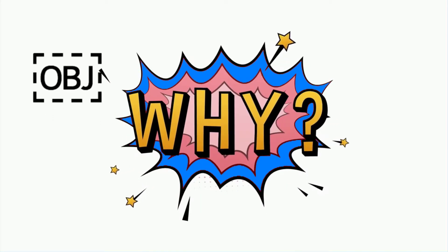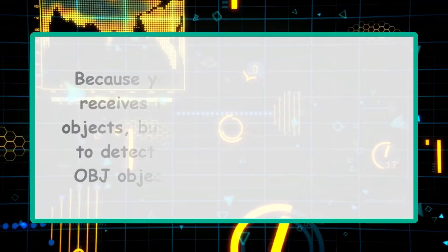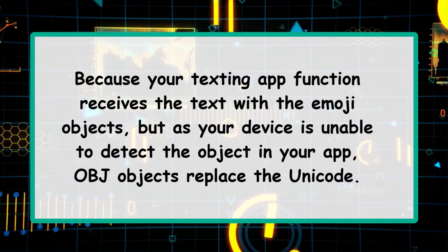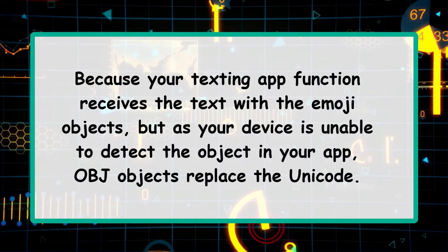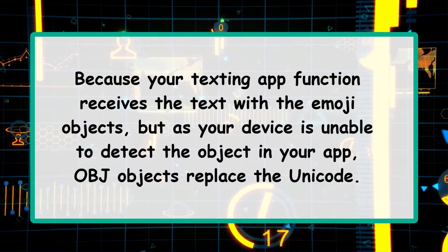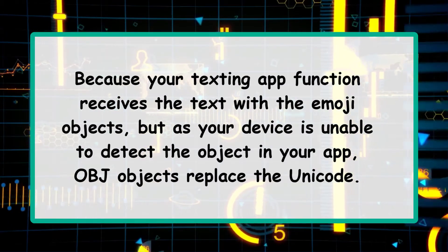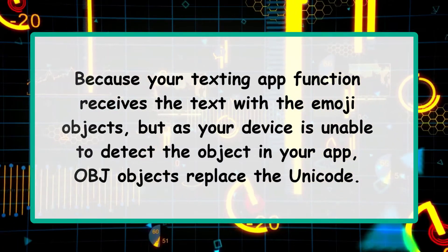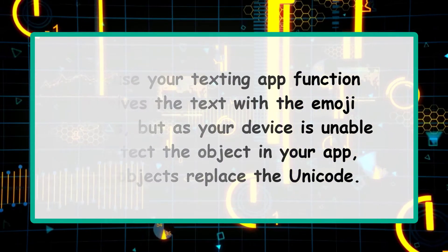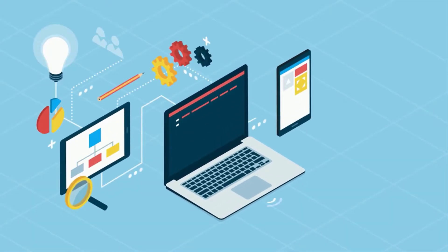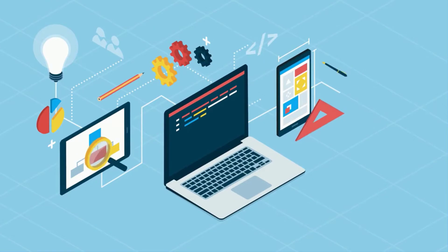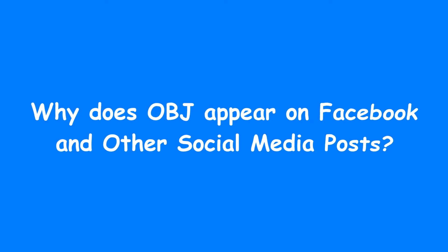You may wonder why they even appear on screen when your device can't recognize them. It's because your texting app receives the text with the emoji objects, but as your device is unable to detect the object, OBJ replaces the Unicode. Sometimes you can't even upload a picture on Instagram due to OBJ emojis.